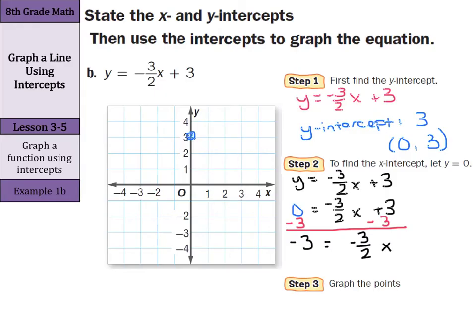And to cancel out the negative 3 halves, multiply by the reciprocal of negative 3 halves, which is negative 2 thirds. And you can do that on both sides. And what you're left with, negative 2 thirds times negative 3 over 1. Well, this cancels. And you're simply left with a negative times a negative is a positive. So our answer is 2 equals x.